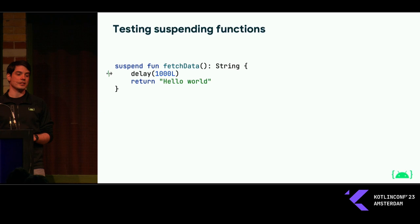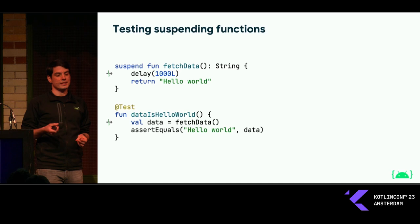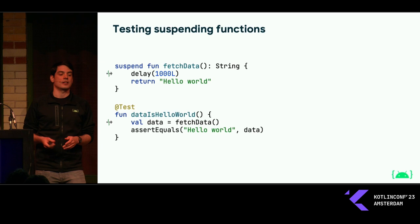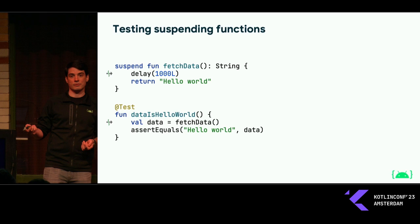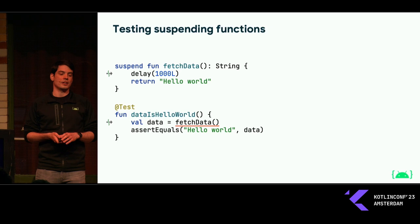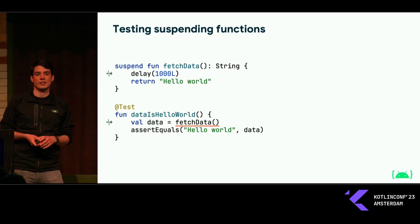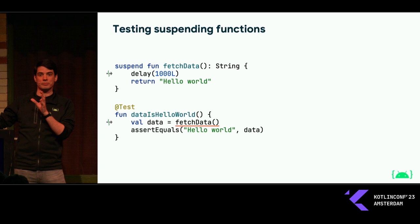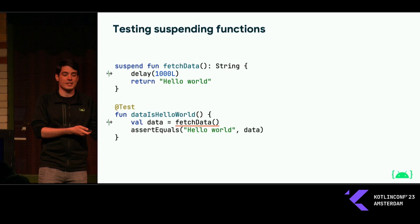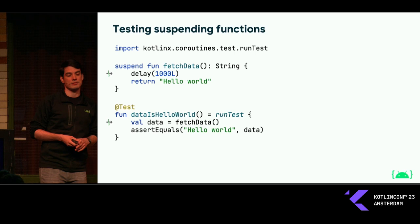Here's a super simple suspending function to start with. It delays for a second and then it returns the hello world string. If I want to write a test which asserts the return value of this function, it might look like this — it calls the function and then we assert whatever it returned. This doesn't work on its own because we're only allowed to call suspending functions from suspending functions. So we need to get inside a coroutine to be able to call this function during our test. And this is what coroutine builders serve, bridging the gap of regular blocking code with the world of coroutines. We have a special coroutine builder in the testing library called runTest that we can use here.